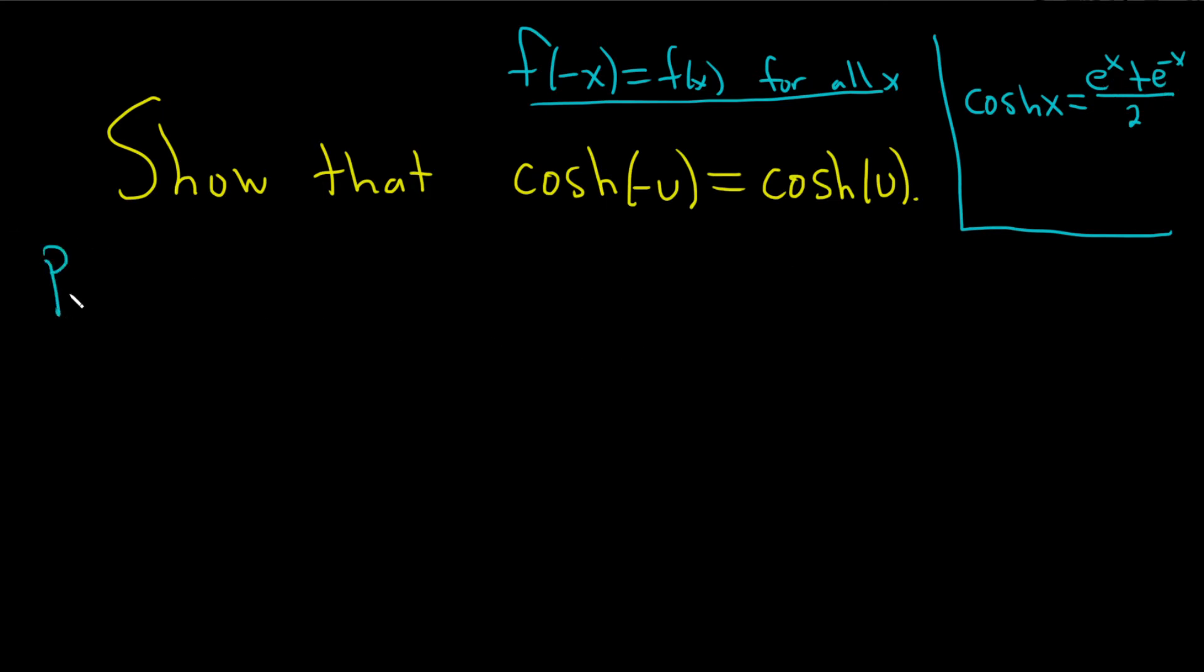Okay so proof. I think we can just do it in one line. Let's see. We have the cosh of negative u. Let's start with that. And what's that equal to?